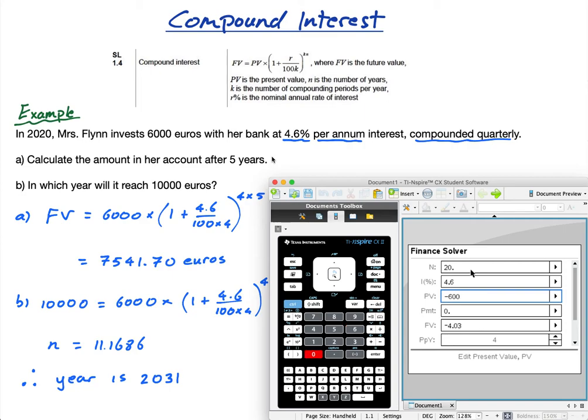So I like to think of it as if it's moving away from you, you make it negative. If you were taking out a loan—and those of you doing applications will use this for loans—you make it positive. But seeing as we're investing, it's moving away from us, we make it negative. The payment is zero because we're not making any more payments.